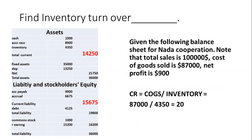Next, we can find the inventory turnover. This ratio depends on the relationship between COGS — the cost of goods sold, which includes direct material and labor costs — and inventory. The COGS here is $87,000, given in the notes, and the inventory from total assets is $4,350. So the COGS represents the inventory 20 times — this is the inventory turnover.